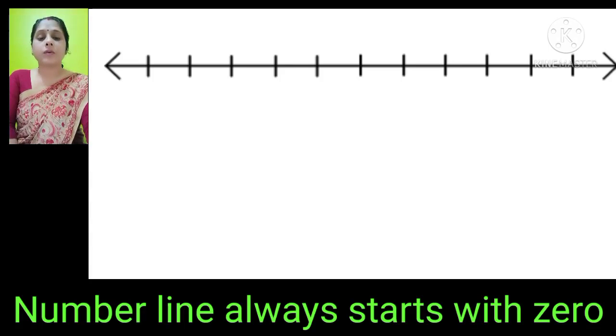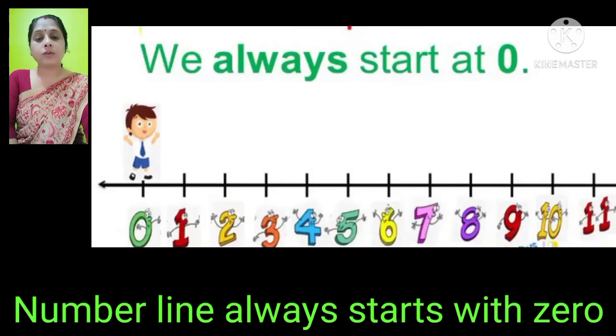We can also use a number line for adding numbers. For addition, we count forward. For subtraction, we count backward.